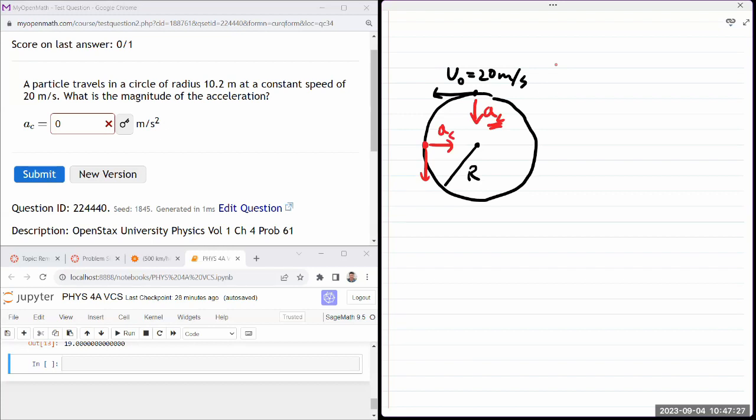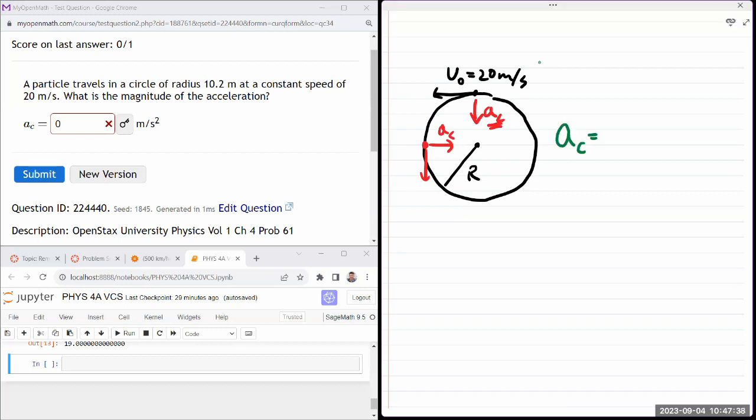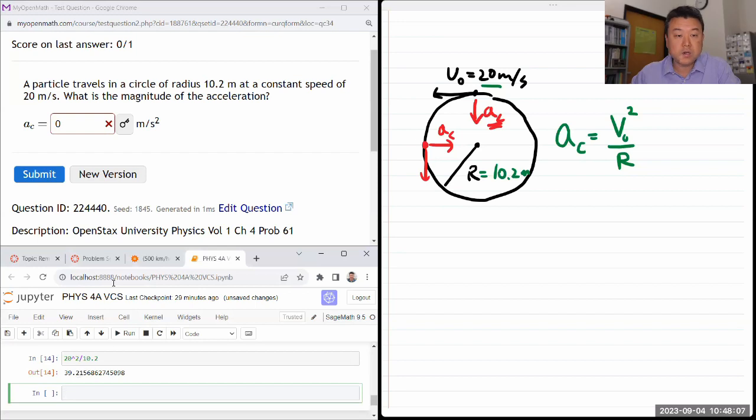We went through the derivation, the textbook did, and I stepped through the textbook derivation. For this question, you just need to use the memorized formula. The centripetal acceleration is given by v squared over r. So v naught squared over r. I have this number, I have this number, 10.2 meters. When you plug those units in, you get meter per second squared, perfect unit for acceleration. So 20 meter per second squared divided by 10.2 meters, that will give me 39.2 meter per second squared.